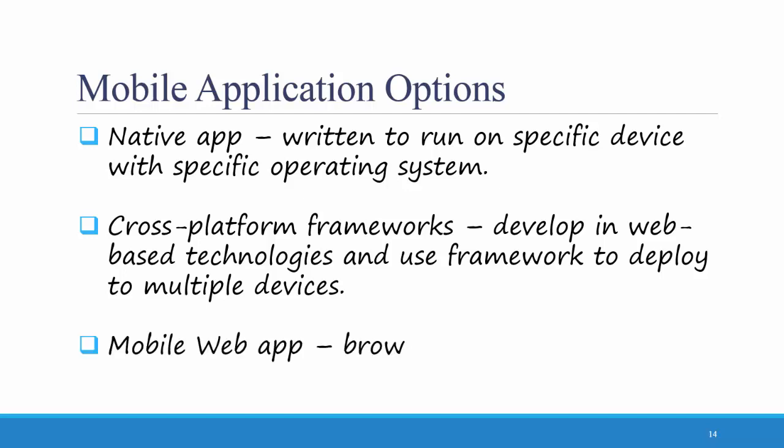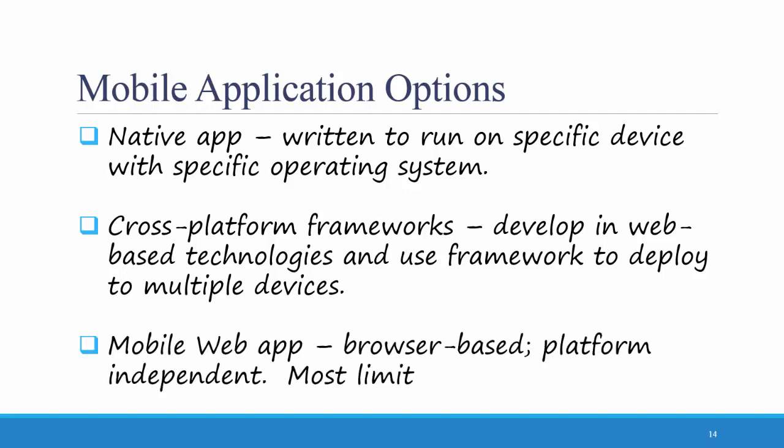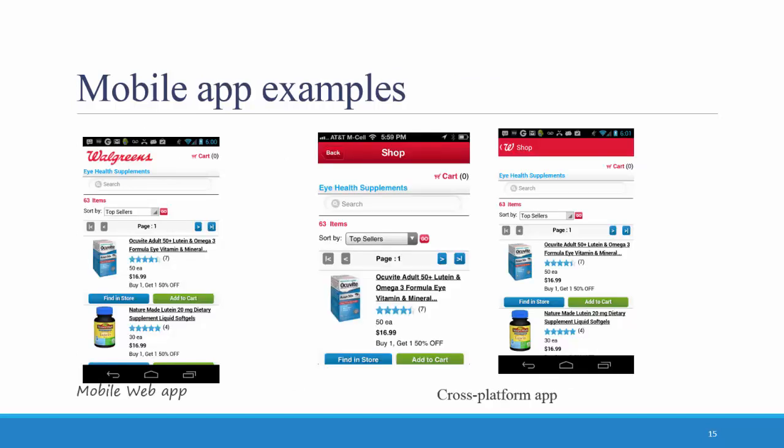A mobile web app is browser-based and platform-independent, and it has the most limited user experience. Here are some examples of mobile apps. Walgreens' mobile web app is shown on the left — this is what you see when you access Walgreens' website from your mobile phone's web browser. You'll notice that the mobile web app looks very similar to Walgreens' cross-platform app, which is built using browser-based technologies such as HTML5 and JavaScript.